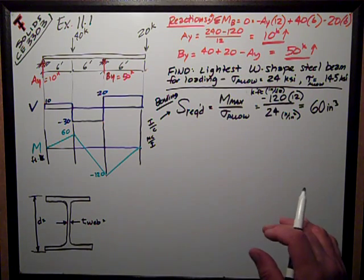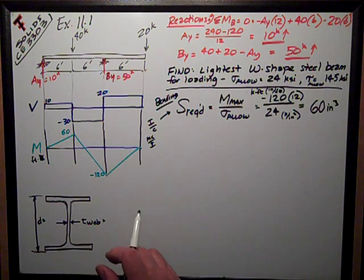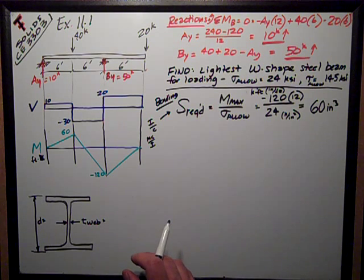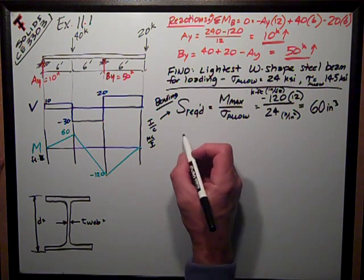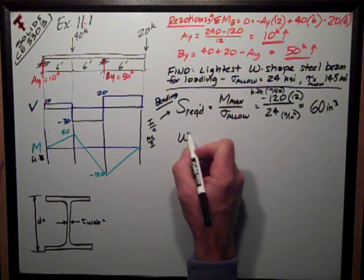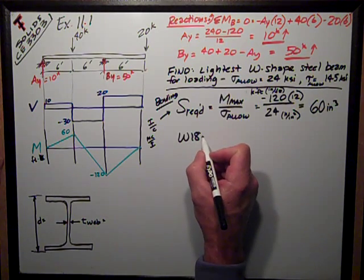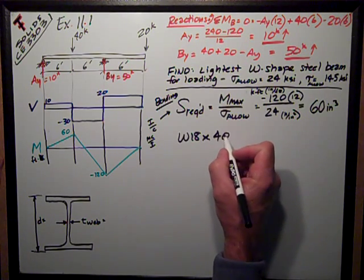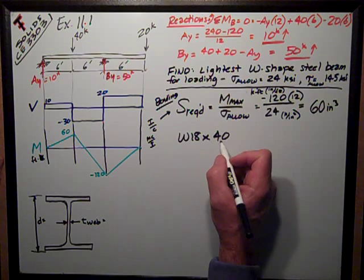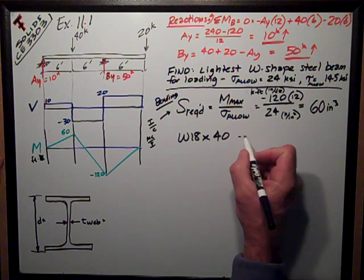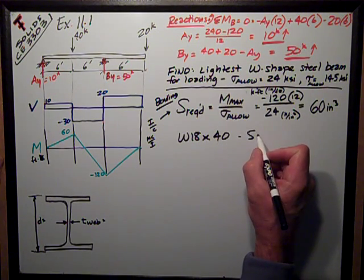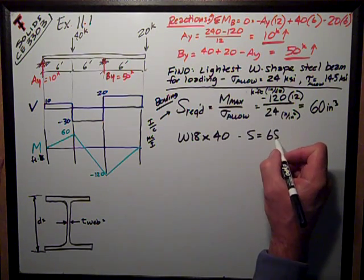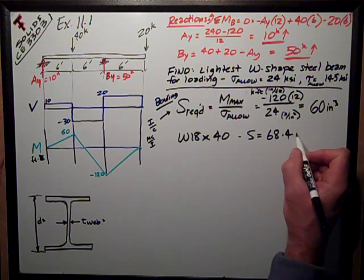So, I go into a table. In the book, it has from Appendix B several suggested beams and generally, you're going to want to go for the lightest beam. And so, that is a W18, meaning it's 18 inches, approximately tall or deep, by 40, meaning it weighs 40 pounds per foot, linear foot.